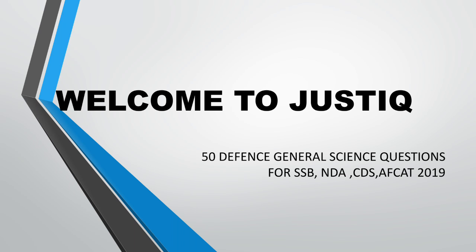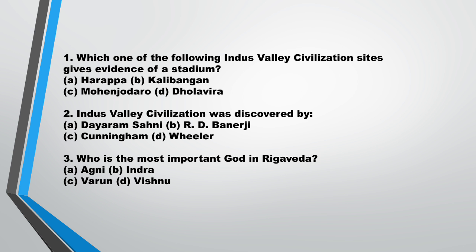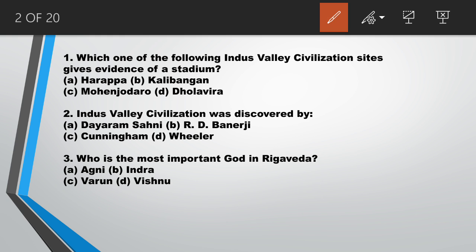Hello friends, welcome to Just IQ. Today we will discuss 50 General Science questions for SSB, NDA, CDS, and AFCAT 2019. Our first question is: which one of the following Indus Valley Civilization sites gives evidence of a stadium? Answer is Dholavira, option D. Second question: Indus Valley Civilization was discovered by? Answer is Daya Ram Sahni.